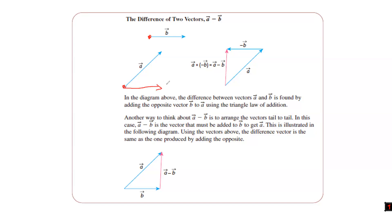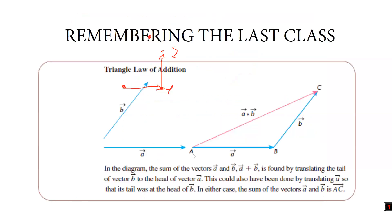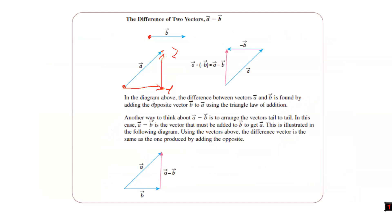For subtraction, you can also transfer the tail of vector b to the tail of vector a — tail-to-tail. The resulting vector starts from the nose of the vector you're subtracting and travels to the nose of the vector you're subtracting from. In addition, the result starts from the tail of the one you're adding to and goes to the nose of the one you're adding.